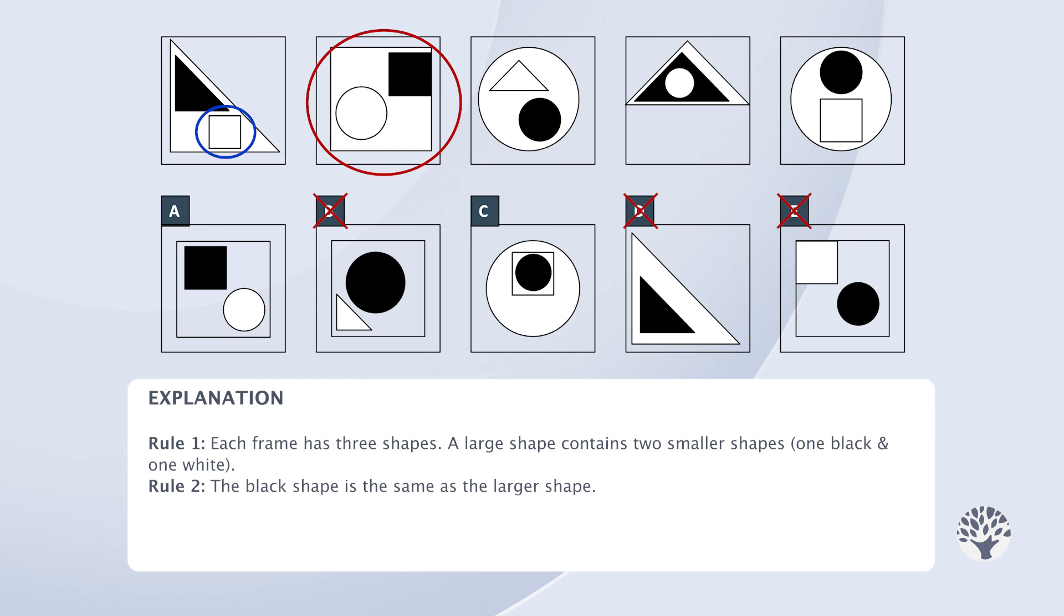So it's safe to say that the small white shape in one frame is the same as the large white shape in the next frame. That's our third rule.